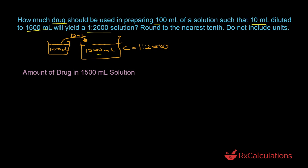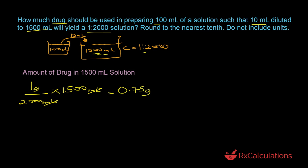For step one, we determine the amount of drug in the 1500 milliliters solution using the volume and concentration. The concentration is 1 is to 2000, which implies 1 gram of drug in 2000 milliliters of solution. We have 1500 milliliters, so we multiply: 1 gram divided by 2000 milliliters times 1500 milliliters. The milliliters cancel out and that equals 0.75 grams. So we have 0.75 grams of drug in the 1500 milliliters solution. Notice that all 0.75 grams came from the 10 milliliters we took from the original 100 milliliters solution.